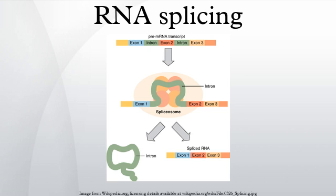A number of proteins including U2AF and SF1 are required for the assembly of the spliceosome. In the E complex, U1 binds to the GU sequence at the five-prime splice site, along with accessory proteins ASF/SF2, U2AF, and SF1-BBP. In the A complex, U2 binds to the branch site and ATP is hydrolyzed. In the B1 complex, U5-U6 trimer binds, and U5 binds exons at the five-prime site, with U6 binding to U2.